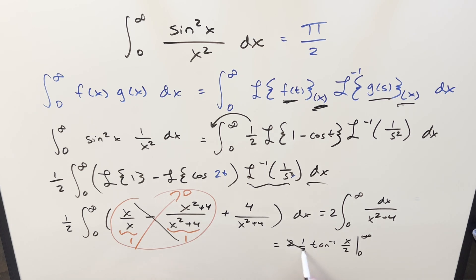2 times a half is 1, arctan is 0, it's nothing. Plug in infinity, and for my final solution, we just get pi over 2.